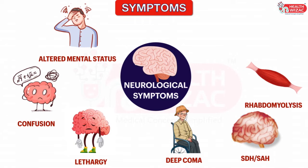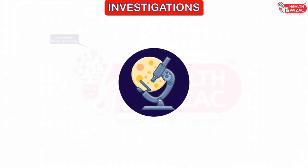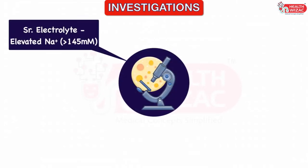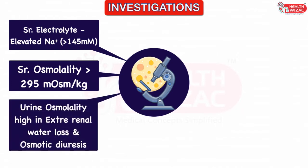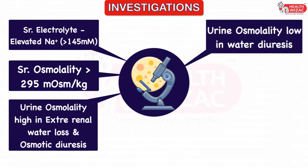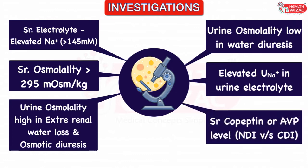Osmotic damage to muscle membrane due to hypernatremia may lead to hypernatremic rhabdomyolysis. Whereas rapid correction of plasma sodium by more than 10 millimoles per day may lead to cerebral edema and seizure. Investigations helpful in diagnosing hypernatremia include serum electrolyte level showing high sodium, serum osmolality level which may be elevated due to hypertonicity, urine osmolality which may be high in extra-renal loss or osmotic diuresis, or low in water diuresis. Urine electrolytes may show high sodium excretion, and serum copeptin or circulating arginine vasopressin level may help differentiate nephrogenic from central diabetes insipidus.